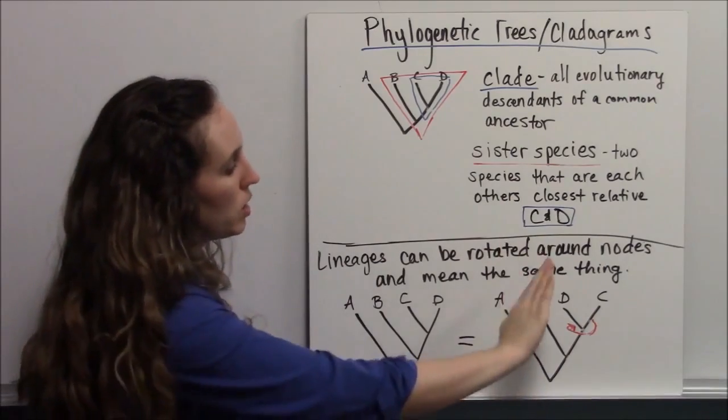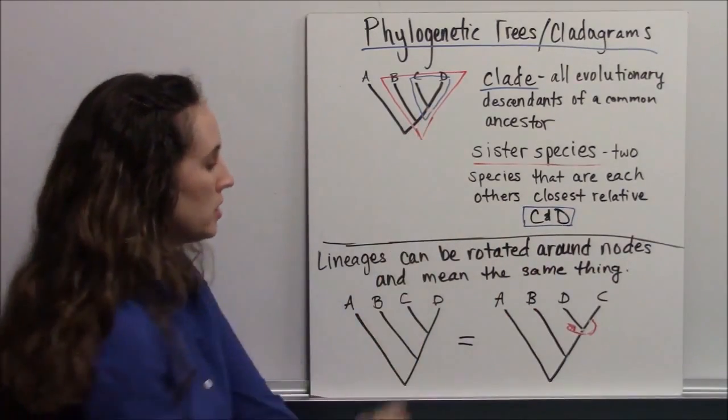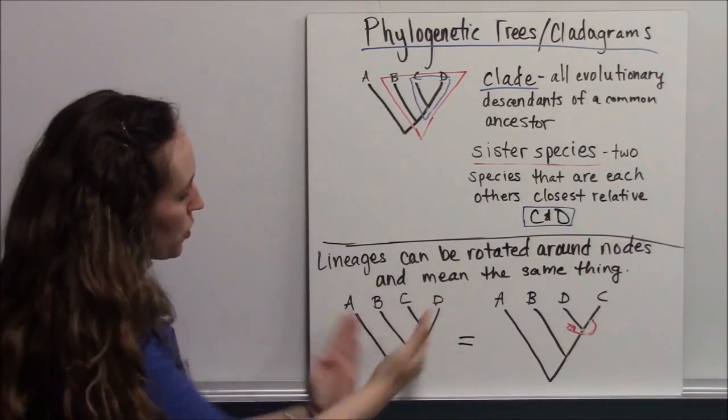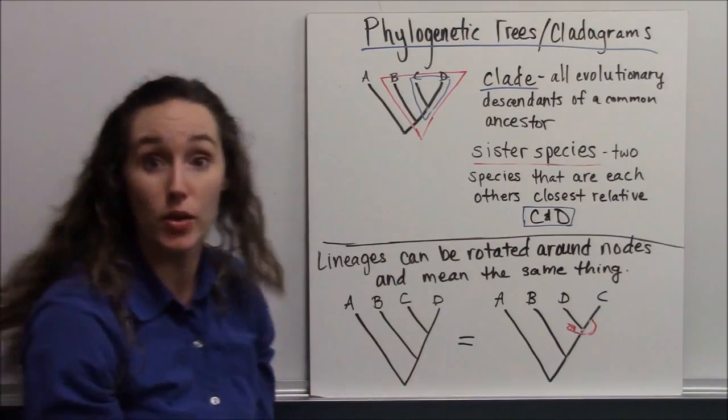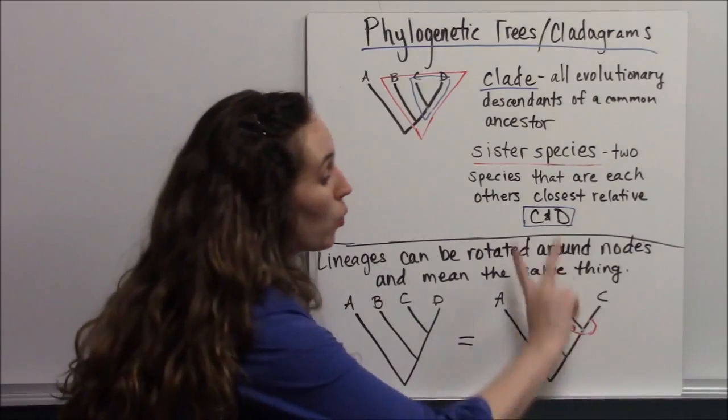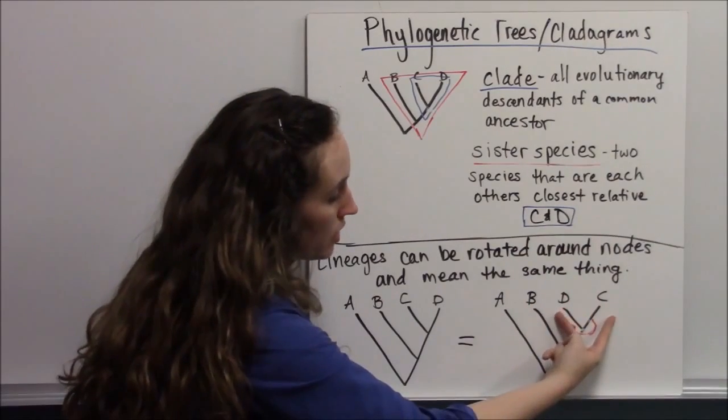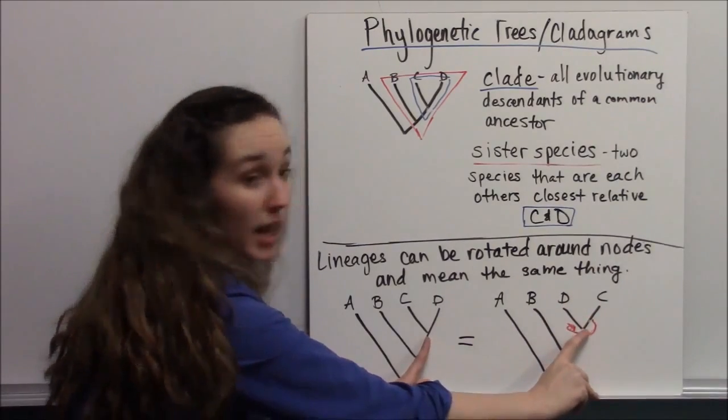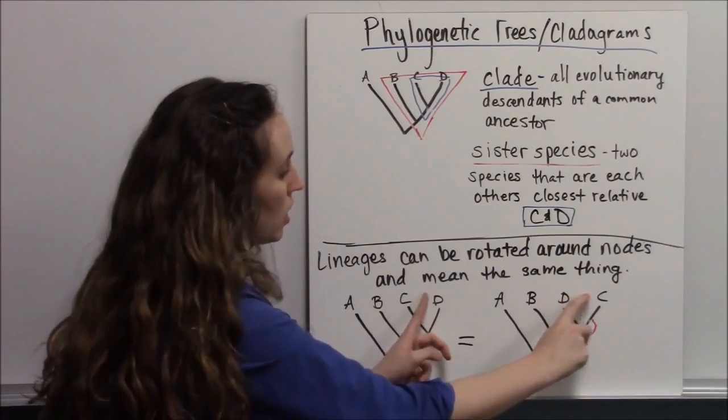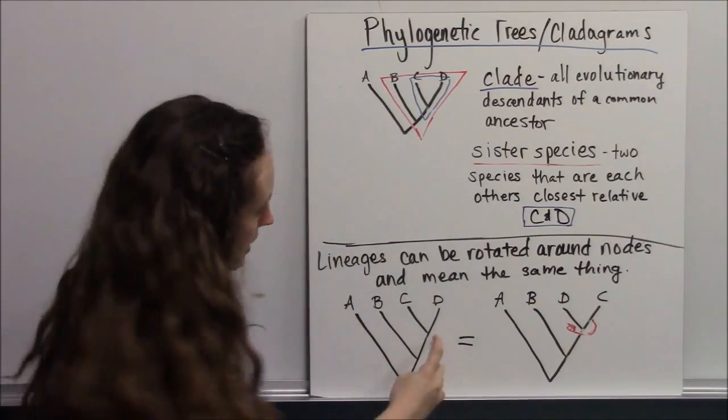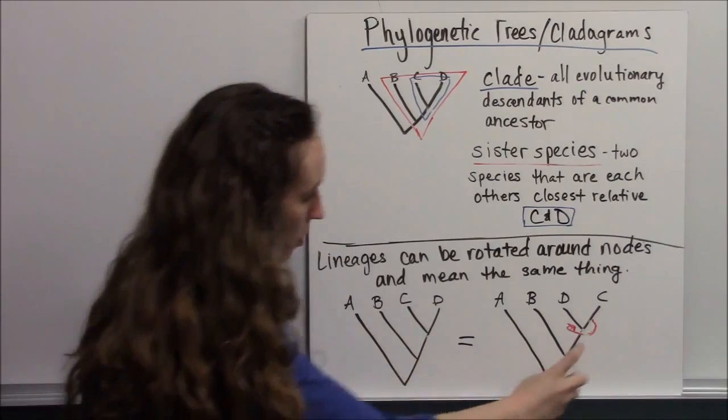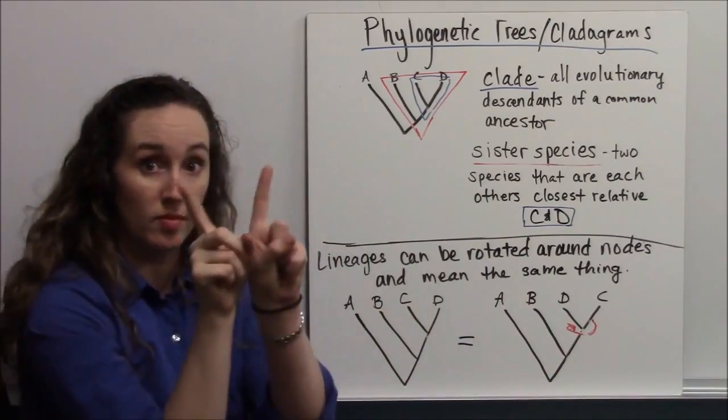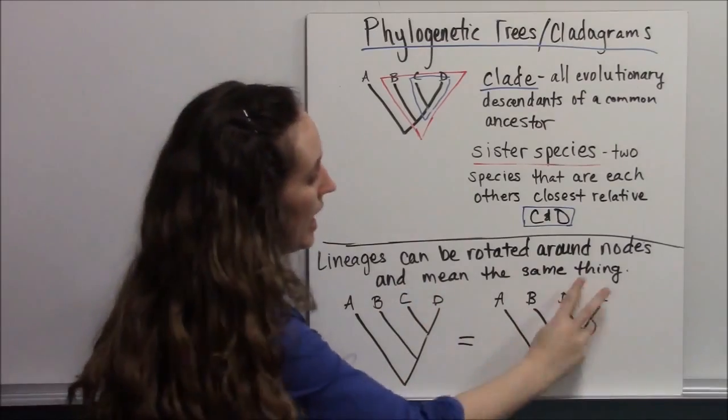Because lineages can be rotated around nodes, those points of common ancestry, and mean the same thing. I have this tree that has C and D here at the end as sister species, and I rotate those. If I just switch those on this tree, they're still equally related to each other. Their common ancestry still comes at this time. So they're equally related to each other, and their common ancestry is still the same distance from B and from A. So C and D are sister species. They can be rotated, and it means the same thing.